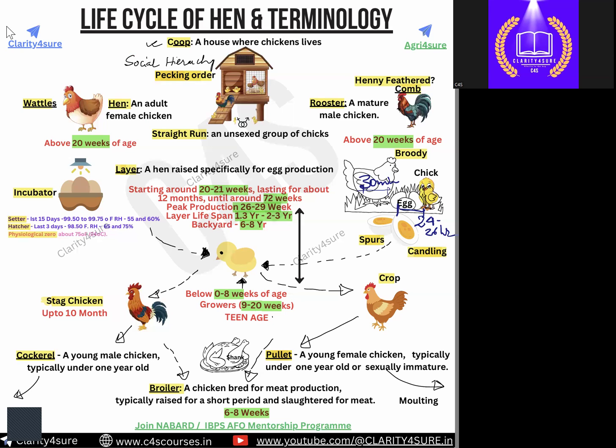An adult female chicken, a very common word everybody knows, is known as a hen. An adult male or mature chicken is known as a rooster. When we use the term adult or mature — or when we use the terms hen or rooster — it means their age is above 20 weeks. Above 20 weeks of age we call them hen or rooster.